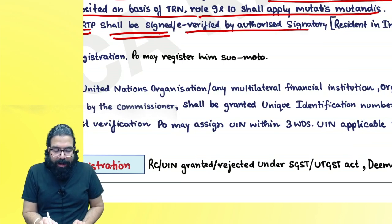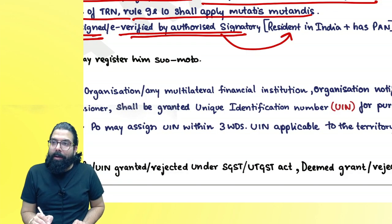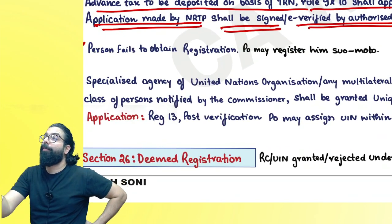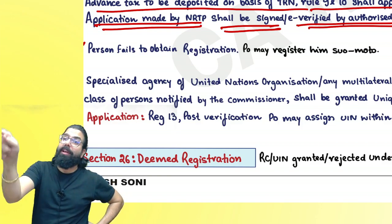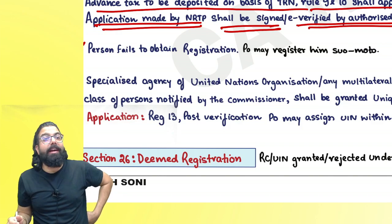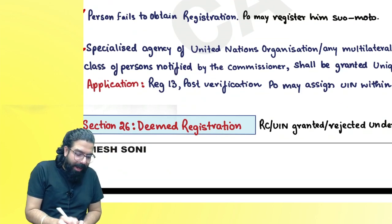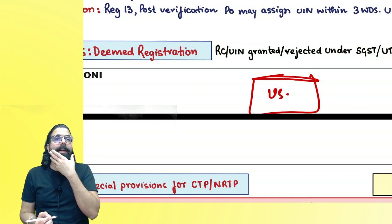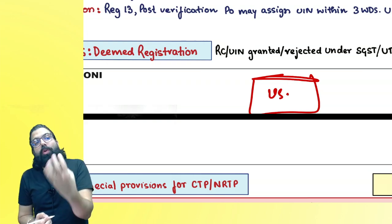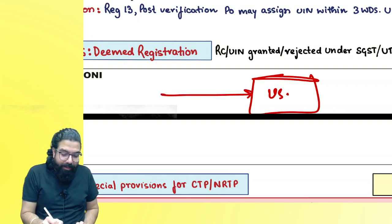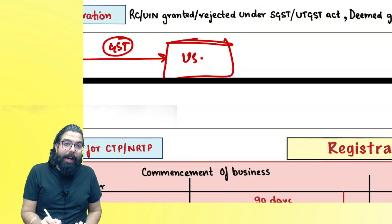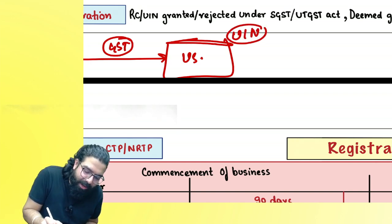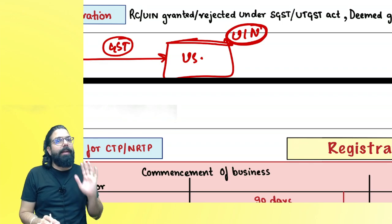Application made by NRTP shall always be signed or e-verified by an authorized signatory who must be a resident of India with a valid PAN. Section 25(8): if you don't take registration and are caught by the proper officer, the proper officer will register you on his own — this is suo motu registration. Section 25(9): UIN — Unique Identification Number — is granted to entities like embassies, consulates, UN agencies, and multilateral financial institutions operating in India.